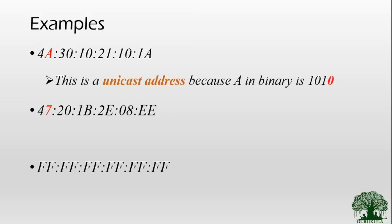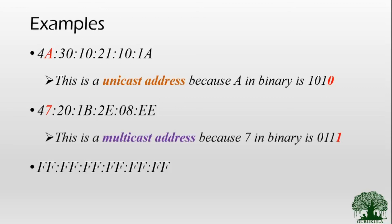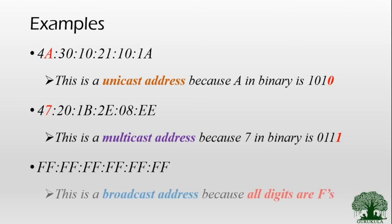Here are examples to identify address types. In the first example, the last bit of the first byte is the hex value 'A', which expands to binary 1010 — the last bit is 0, so this is a unicast address. In the second example with hex value '47', expanding 7 to binary gives 0111 — the last bit is 1, so this is a multicast address. If all values are hex 'F', since F represents all ones, it is a broadcast address.